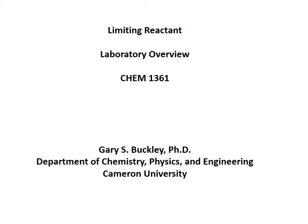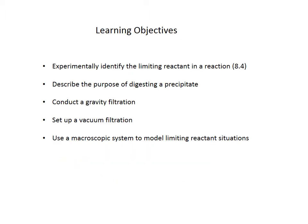Let's take a look at limiting reactant — an overview of limiting reactant types of problems. This may be fairly new to you in class, but this will be the lab experiment coming up pretty quickly. We get the learning objectives here: we're going to try to identify the limiting reactant in a given reaction. You'll be given an unknown that has two components in it, and you want to figure out which one is limiting based on how much product you got.